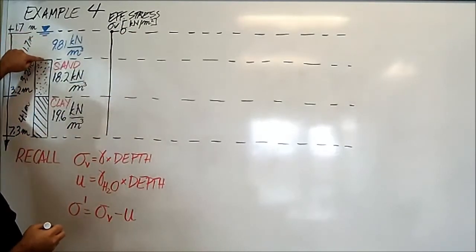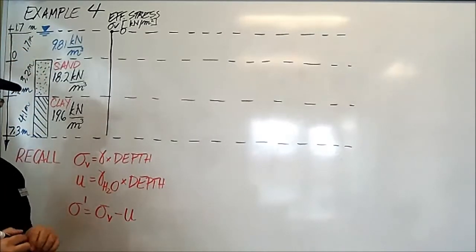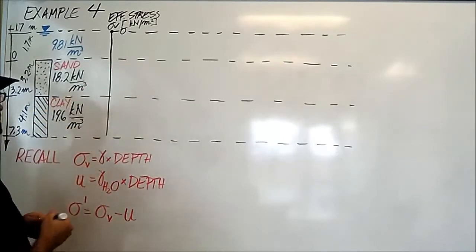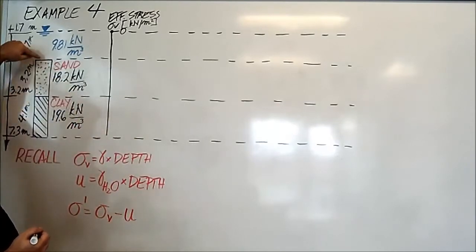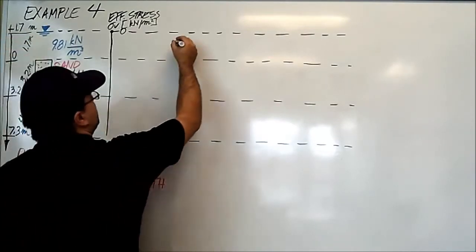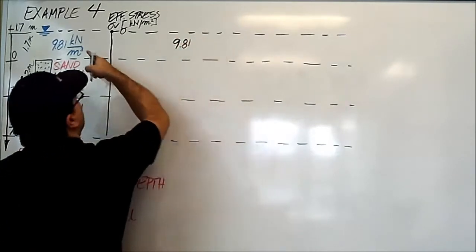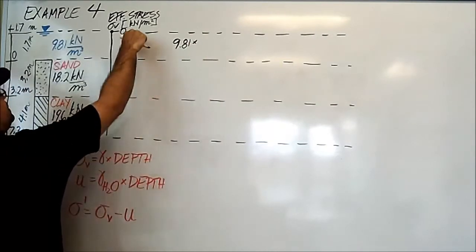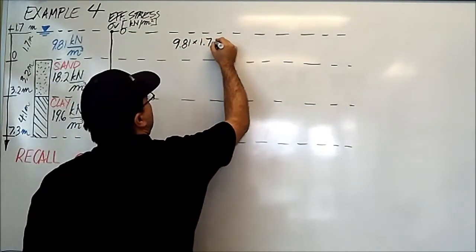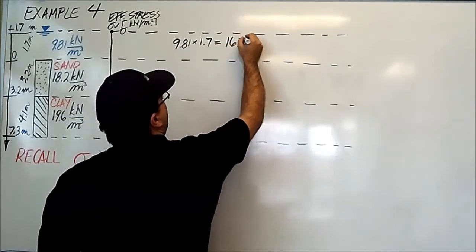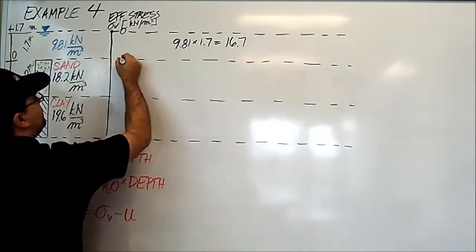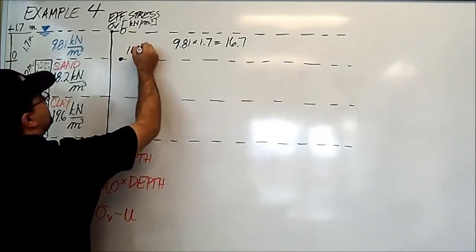At the next interface, where the water gives way to saturated sand, the calculation is exactly as we've done so far. The vertical stress here is the density of the soil above. Well, the soil above is actually just water. So it's 9.81 kilonewtons per cubic meter times the depth. The depth of water here is 1.7. And this number is equal to 16.7 kilonewtons per square meter.